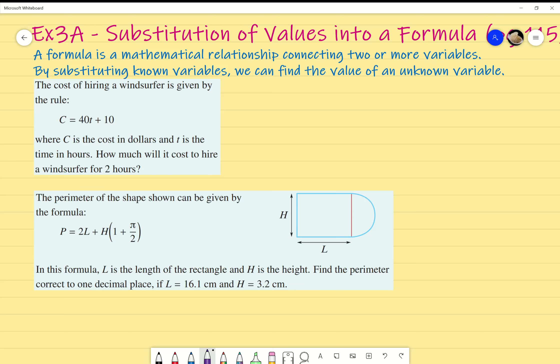So, C equals 40 times T plus 10. Now, what that tells me is that even when time is zero hours, it's still going to cost $10. Because that's the flat rate. It doesn't matter how many hours you hire it for, it's going to cost $10.